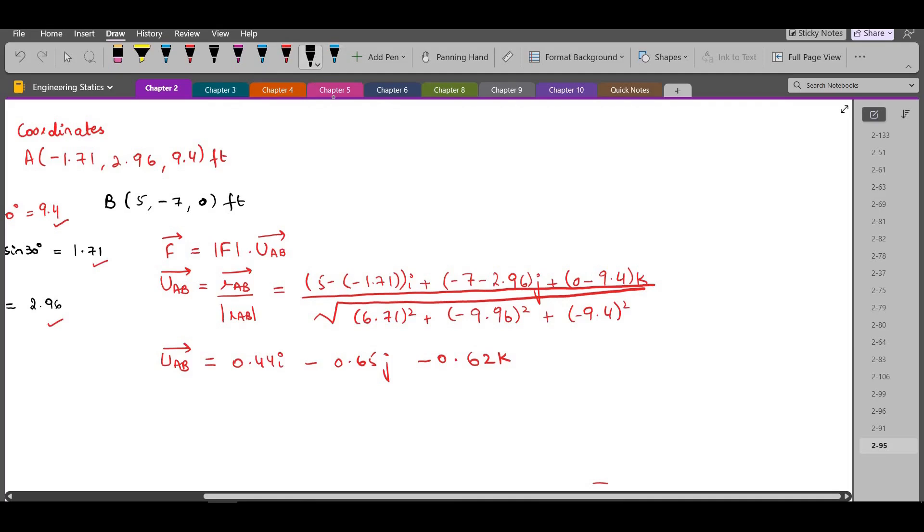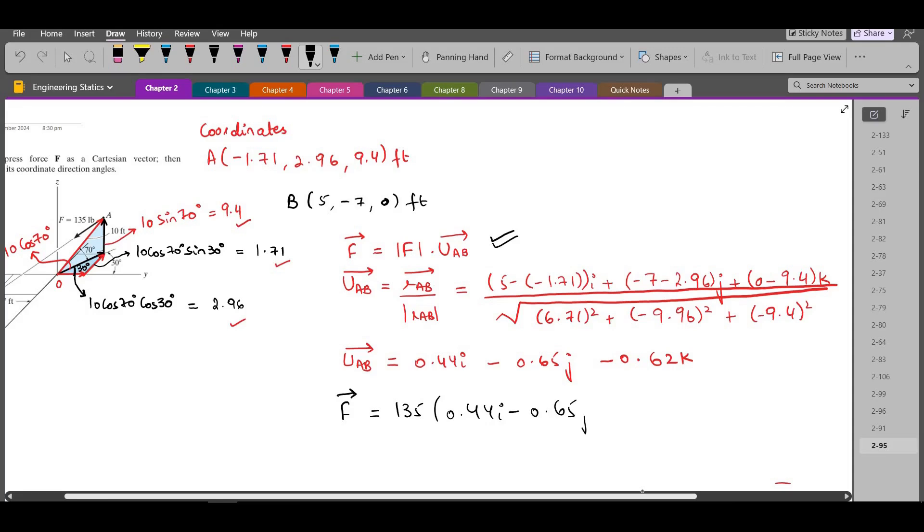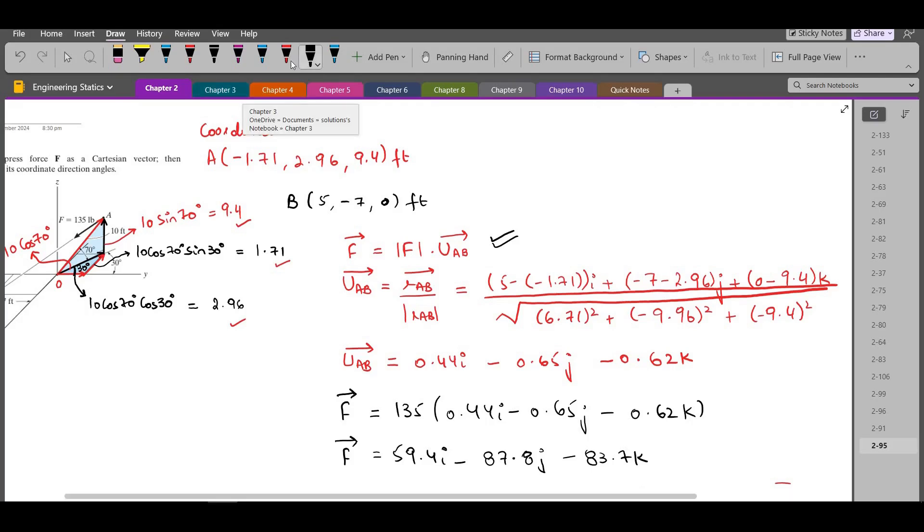Now we have to put the values of UAB into this equation. So the force F in terms of Cartesian vector form becomes the magnitude of the force F which is 135 lb into 0.44 i minus 0.65 j minus 0.62 k. So the force F in terms of Cartesian vector form becomes 59.4 i minus 87.8 j minus 83.7 k. So this is our first answer.